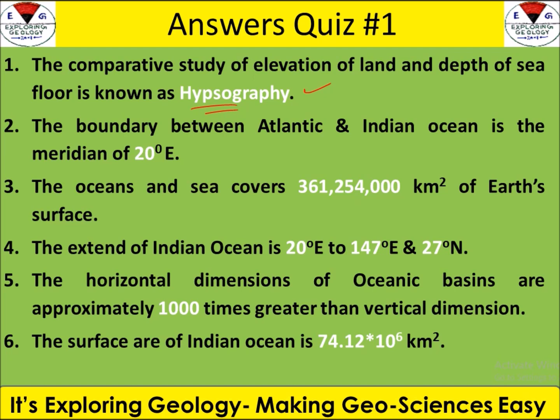The next answer is 20 degrees East. The next answer is 361,250 — remember 361,250,000. For the Indian Ocean extension, the longitude is 20 degrees and 147 East, and the latitude is 27 degrees. The horizontal-to-vertical dimension difference is approximately 1000 times. The surface area of the Indian Ocean is 74.12 × 10⁶ square kilometers.